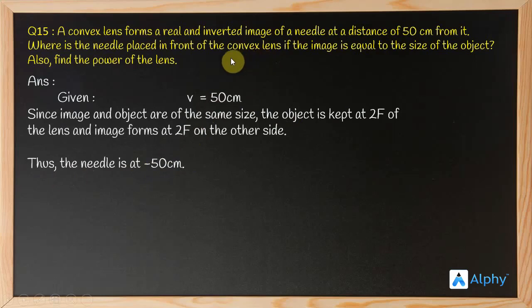Now we have to answer the second part of the question. The second part asks for the power of the lens. To find the power of the lens, you need to know the focal length because power is 1 by focal length. So the question is: how to find focal length?